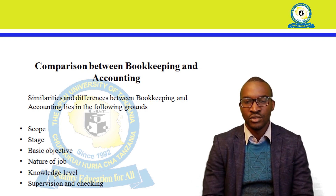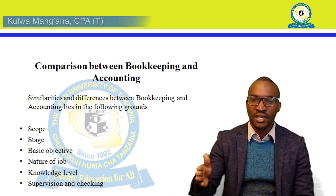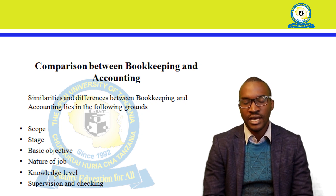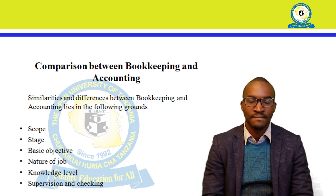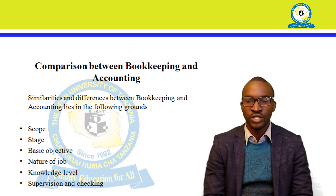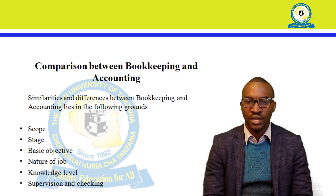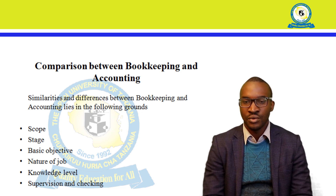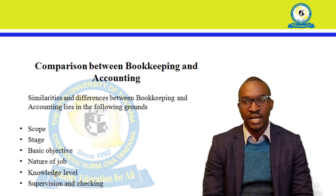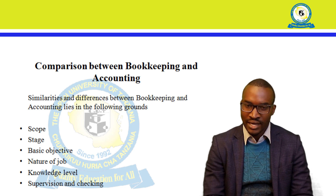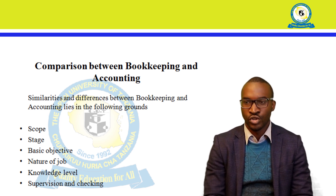Regarding stages, we only go into four stages for bookkeeping, and the remaining stages account for accounting. The objective behind bookkeeping is only to record financial information, but the objective behind accounting goes beyond into analyzing and coming up with interpretation of financial statements. As for the nature of the job, bookkeeping is more of clerical work, while accounting goes beyond that into analysis and interpretation.